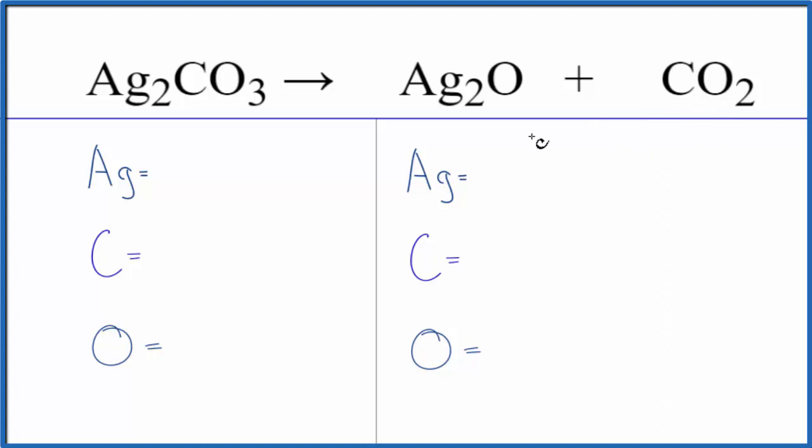To balance the equation, we need to be careful and count the atoms up on each side. So two silver atoms, one carbon, and then the three oxygen atoms.